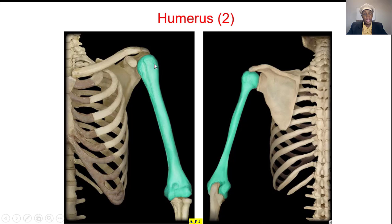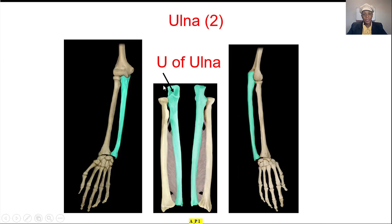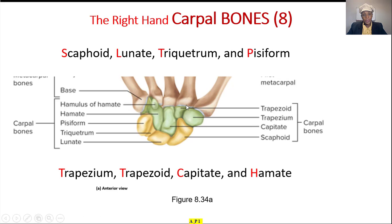Then we come to the upper extremity, the humerus — humor, like if you tickle somebody. And the radius — the way to remember the radius is a circle; the radius has a circle at the proximal end, the radius is half of diameter. And the ulna looks like a U, U of the ulna.